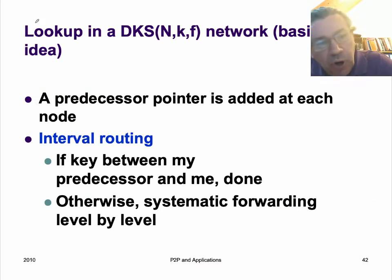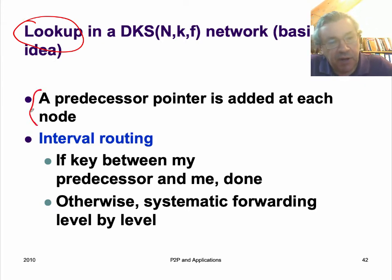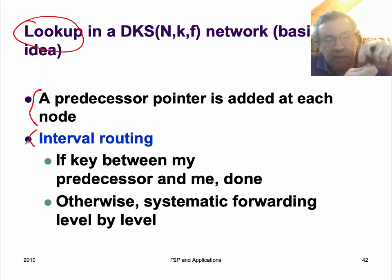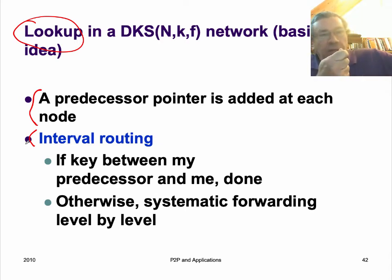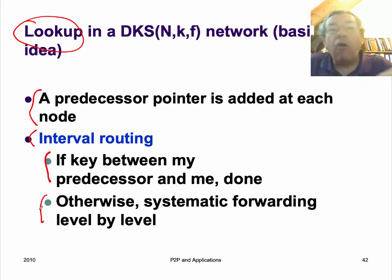For lookup, we need to know whether an item is actually stored on the node. We use the predecessor pointer for this and do interval routing. If a key comes to a node and the key's value is between my predecessor and me, then I know the key is stored there — all values after my predecessor and before me are stored at me. Otherwise, I route forward level by level. This is interval routing.